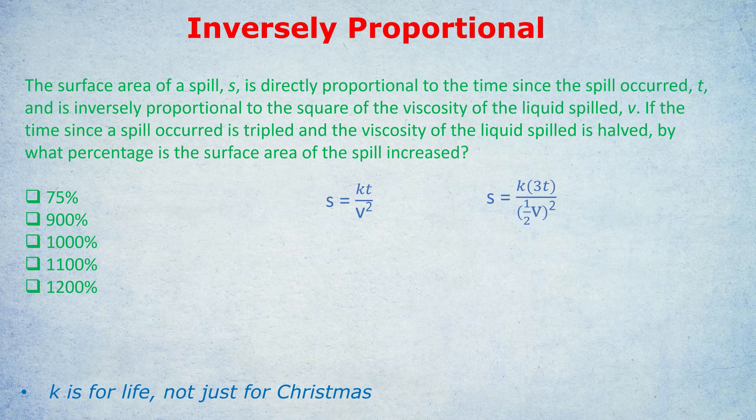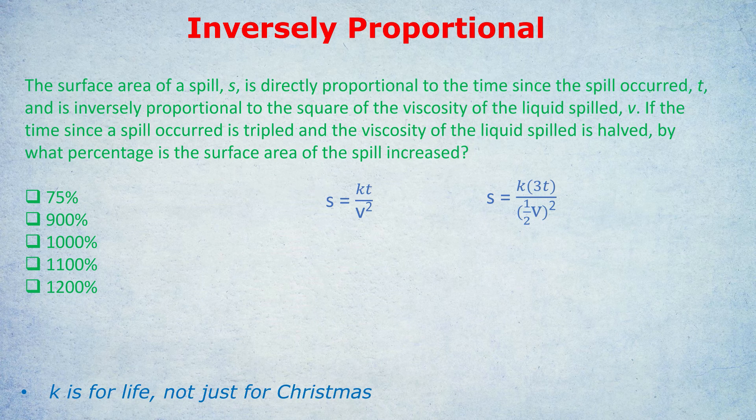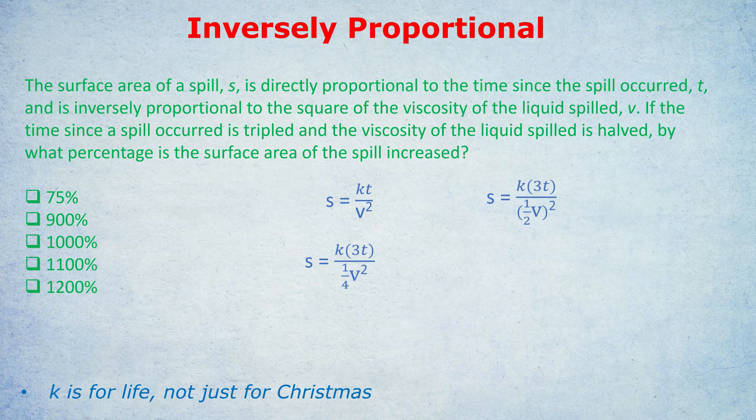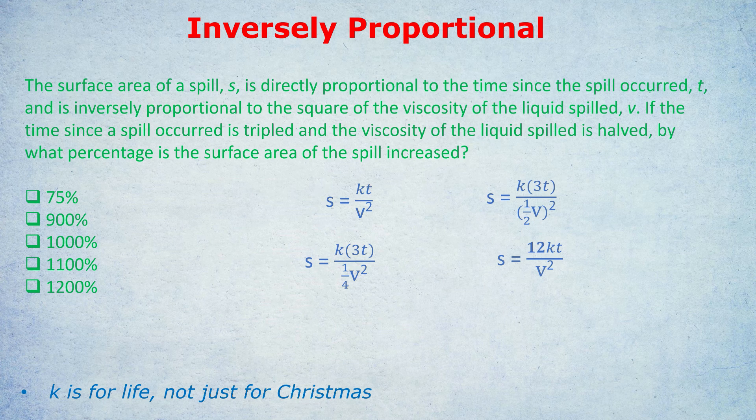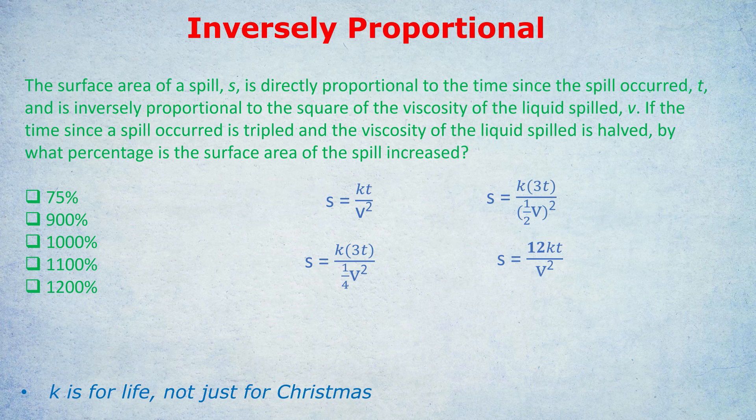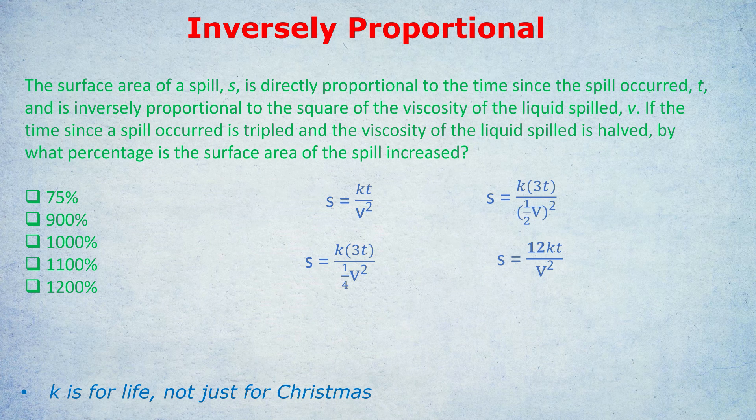Now I just need to do some nifty maths. The 3T is easy, it's basically just 3T. But what is a half squared? A half squared is a quarter. So a half V squared is a quarter V squared. So we have the next step in the calculation. Finally though, we have this 3 on the numerator and a quarter in the denominator. What happens when you divide by a quarter? Dividing by a quarter is the same as multiplying by 4 over 1, or multiplying by 4. So the top line will become 3 times 4, which is 12. Notice I haven't worked out K. I've just worked out that the fraction originally was KT over V squared, but now is 12 KT over V squared. In other words, that entire fraction has gotten 12 times bigger. So the surface area has gotten 12 times bigger.